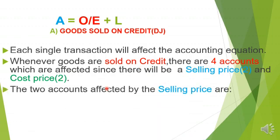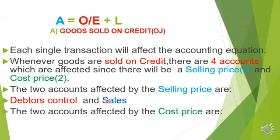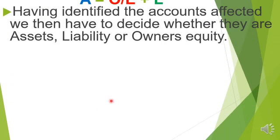The two accounts affected by the selling price are Debtors' Control and Sales — I'll use 'Debtors' and 'Debtors' Control' interchangeably. The two accounts affected by the cost price are Trading Inventory and Cost of Sales. So the four accounts are: Debtors' Control, Sales, Trading Inventory, and Cost of Sales.